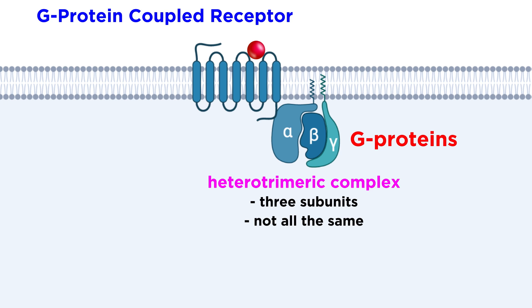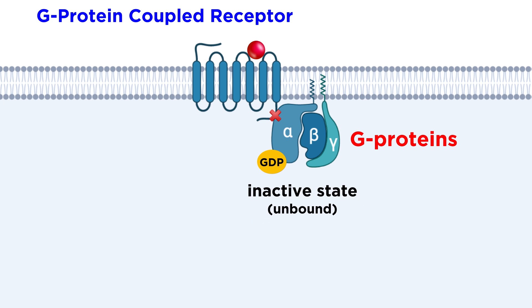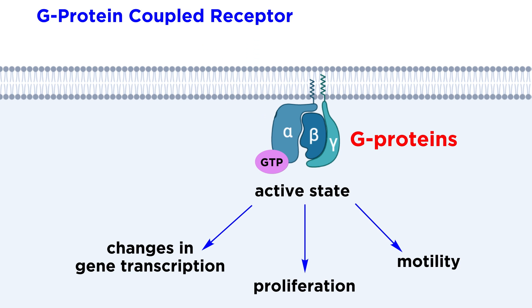In its inactive state, the G protein heterotrimer is bound to GDP. However, when the G proteins bind the receptor, GDP is exchanged for GTP, causing the G protein to become activated as long as it is bound to GTP.